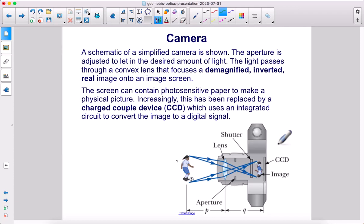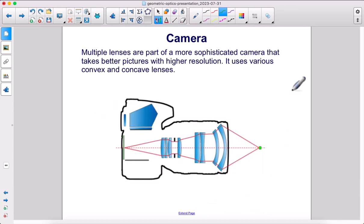Increasingly, this has been replaced by a charged couple device, CCD, which uses an integrated circuit to convert the image to a digital signal. Multiple lenses are part of a more sophisticated camera that takes better pictures with higher resolution. It uses various convex and concave lenses.